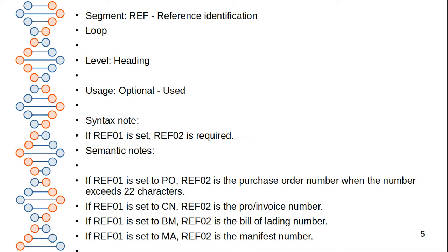The REF segment is the reference identification segment. It contains the loop level of heading and uses optional syntax with RF01 and RF02. Segment notes: if RF01 is set to PO, then RF02 is the PO number when the number exceeds 22 characters. If RF01 is set to CN, then RF02 is the pro invoice number. If RF01 is set to BM, then RF02 is the bill of lading number. If RF01 is set to M8, then RF02 is the manifest number.